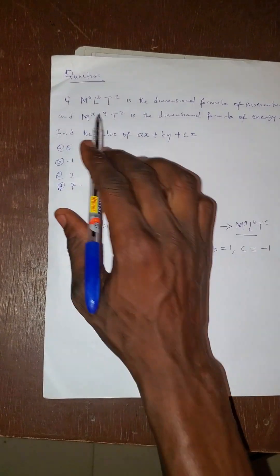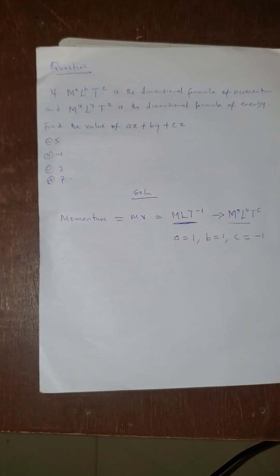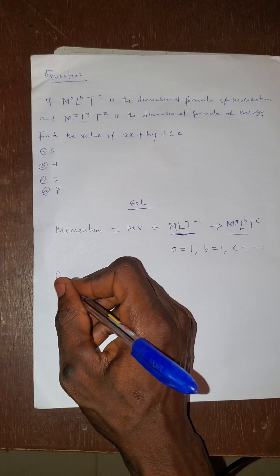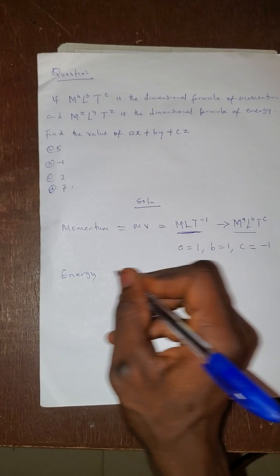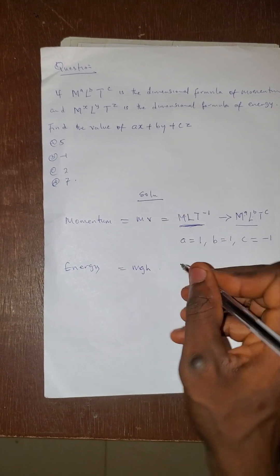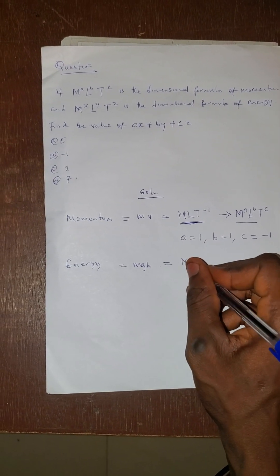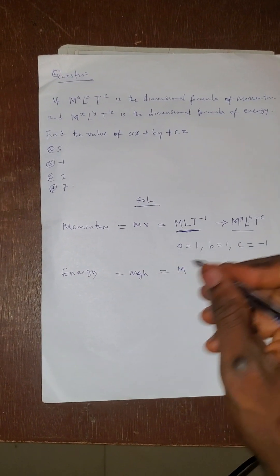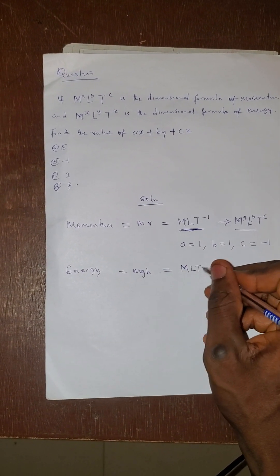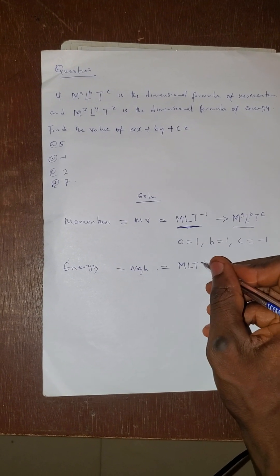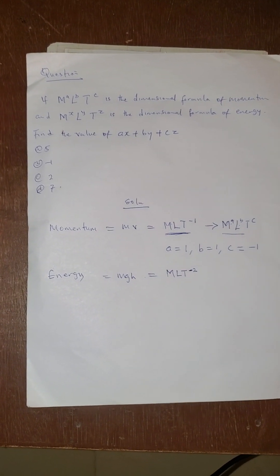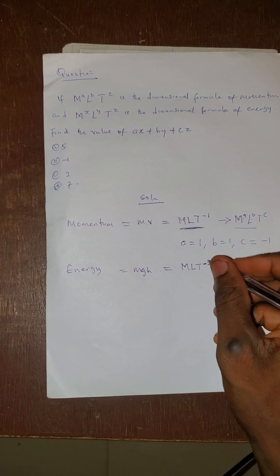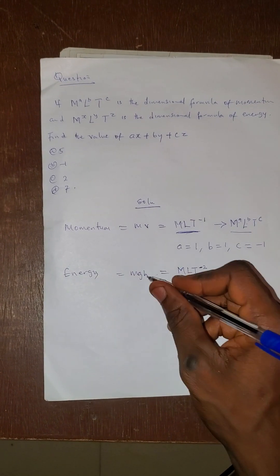The next statement is M raised by x, L raised by y, T raised by z is dimensional formula for energy. Don't forget that energy is equal to mgh. Since energy is mgh, m here is mass, so the dimension will be capital M. Then g here is acceleration due to gravity, so acceleration is LT raised by minus 2.